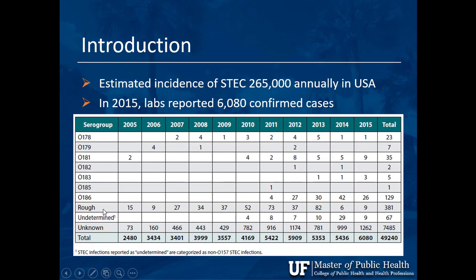Looking at the rough, undetermined, and unknown categories involves what was expressed phenotypically and which test systems were used — a little complicated. But looking at the total, 2015 had about 6,000 confirmed cases versus 2,480 in 2005. That makes you think about whether testing is improving or the bacteria is genuinely more prevalent.